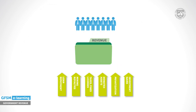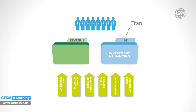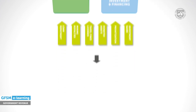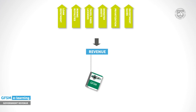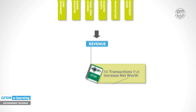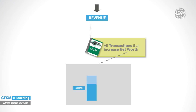Inflows not classified as revenue will relate to investment and financing — transactions in assets and liabilities. The GFSM definition of government revenue will help. Revenue refers to transactions that lead to increases of net worth. Remember that net worth is equal to total assets minus total liabilities, or put differently, net worth is the residual between the two.